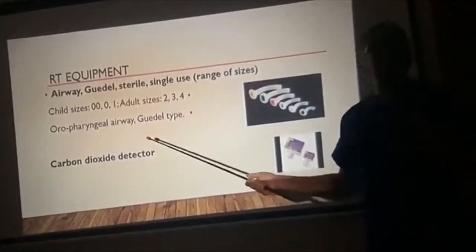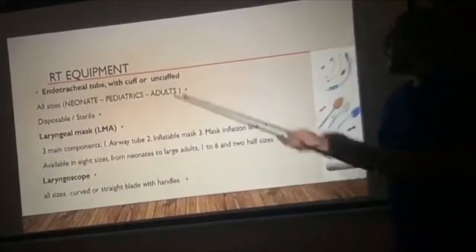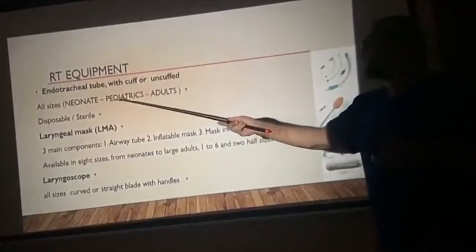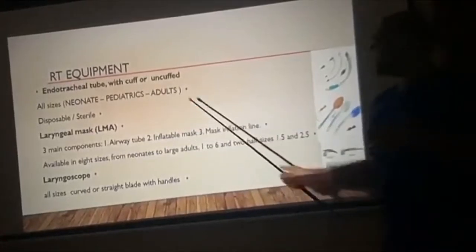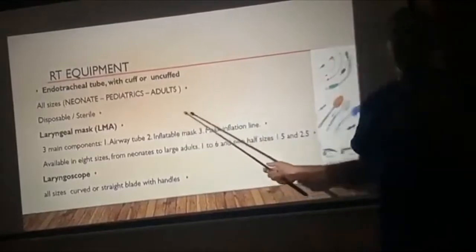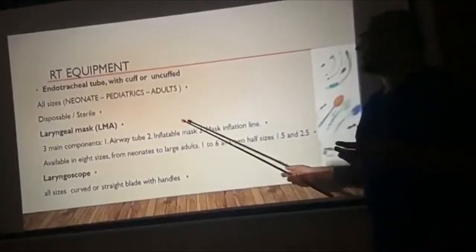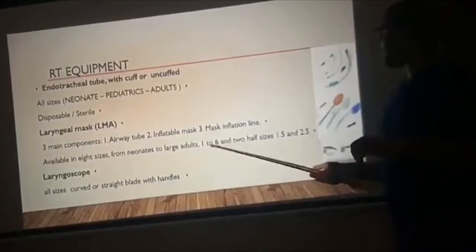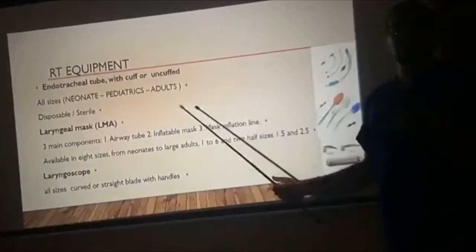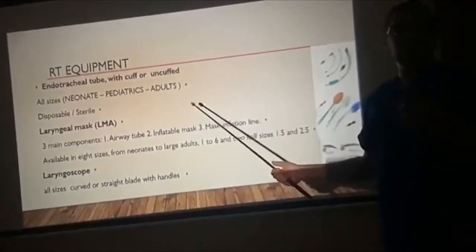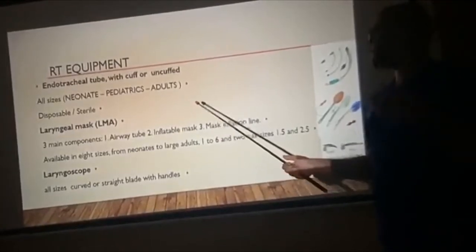The other equipment we should have is the carbon dioxide detector. We should also prepare the endotracheal tube, with or without cuff depending on the patient — neonatal or pediatric patients will most likely have un-cuffed ETT, while adults will have cuffed ETT. For the laryngeal mask, we need to prepare the appropriate size for the patient, and we need to check the cuff for leaks and confirm the tube is in good condition.